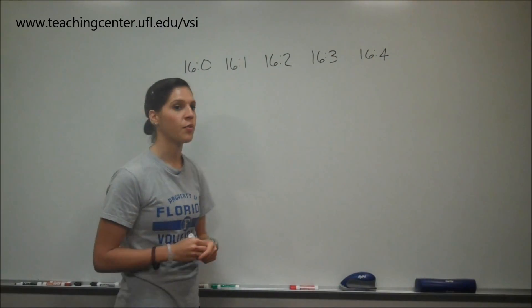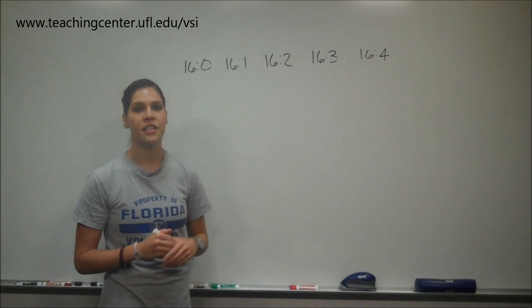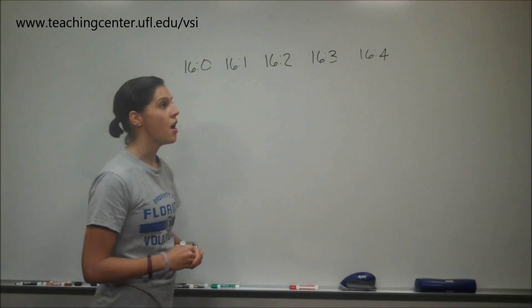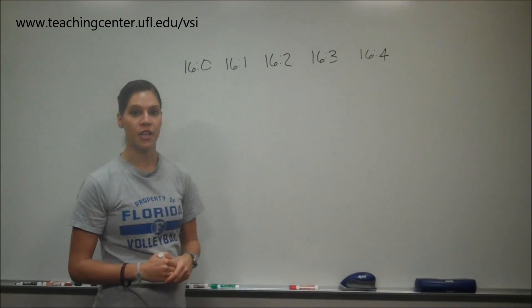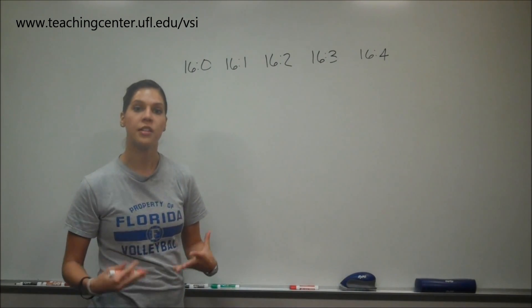Okay, so this is number two, part a. The question states, rank these fatty acids in order of their melting temperature. As previously stated, the first number represents how many carbons are in the fatty acid and the second number represents the number of double bonds in the fatty acid.